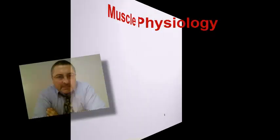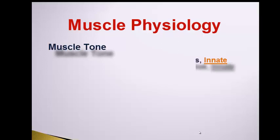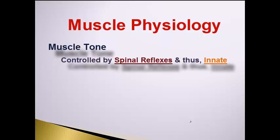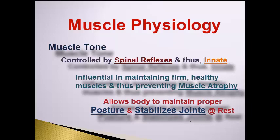There are three other concepts to think about when talking about muscle contractions at a gross level. One of those is muscle tone. Muscle tone is a reflexive stimulus that is innate, and this reflexive stimulus results in muscles exhibiting slight contractions even when we're at rest. We would find these muscle contractions associated with muscles that are important for posture and for stabilizing joints.